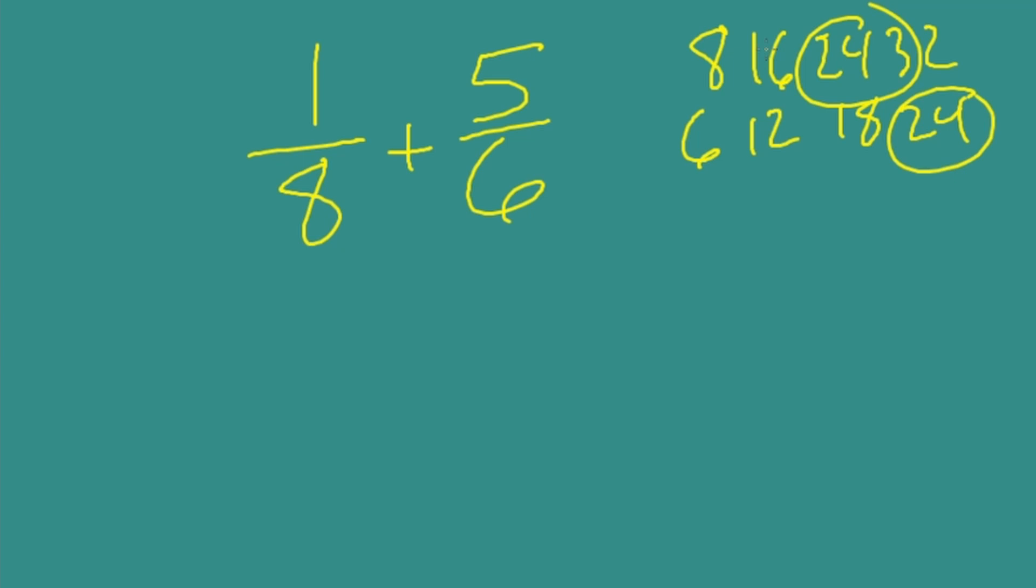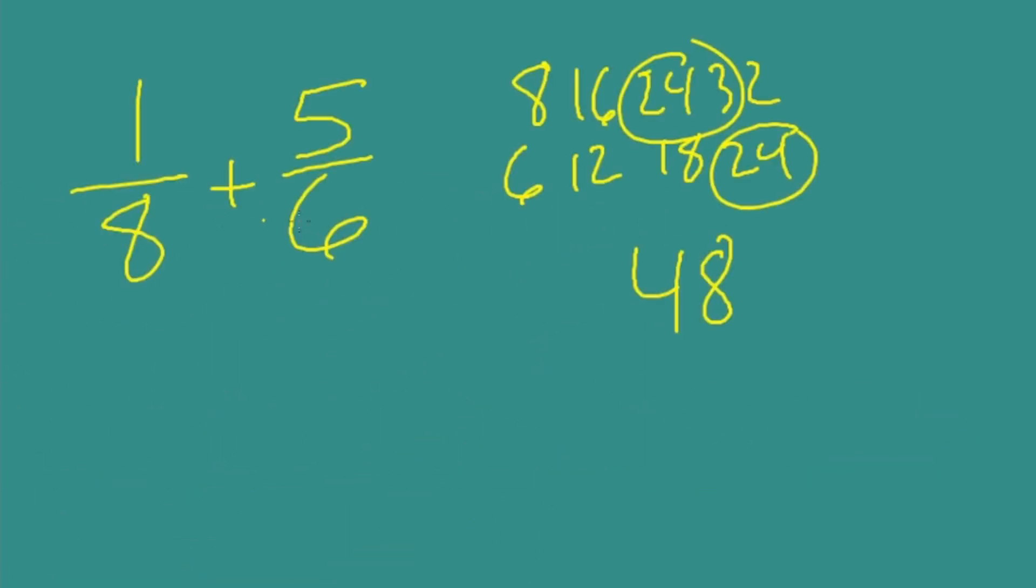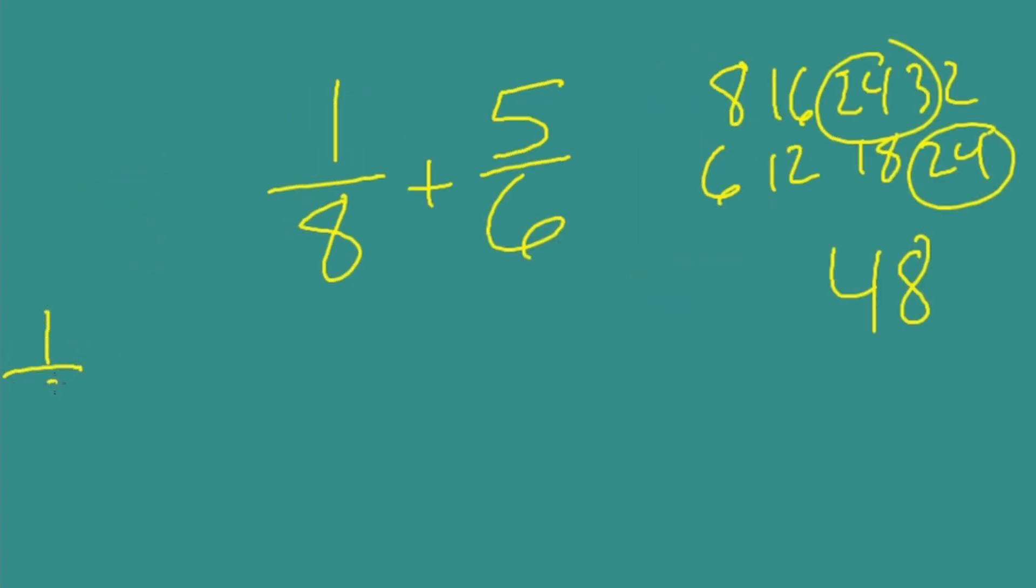1/8 with a denominator of 24. Well, if I start at 8, how many 8s in 24? Three. So I multiply top and bottom by 3. 1 times 3, 3 over 24.